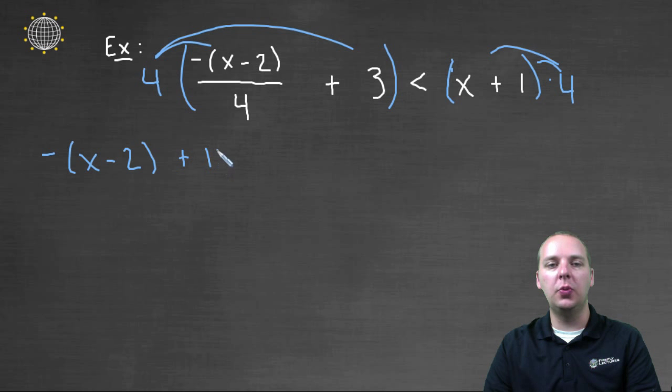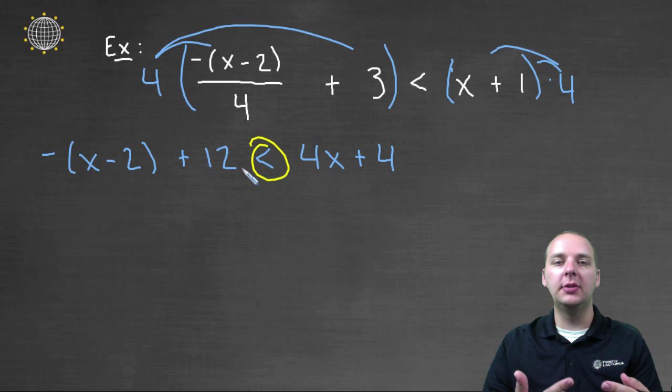we would get plus twelve is less than, strictly less than, four x plus four. And notice I did not have to flip this inequality around, because I multiplied both sides by a positive value. So what I did there was fine.